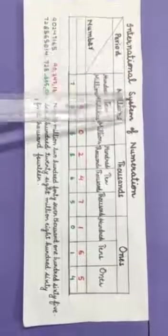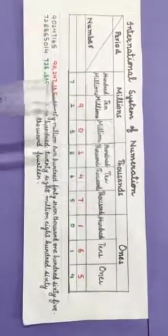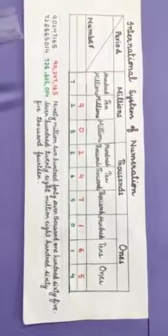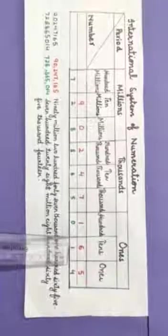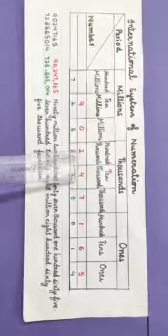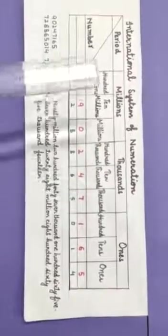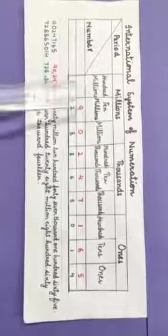Now, moving further, we will discuss the International System of Numeration. In the International System, the first 3 digits from the right form the ones period, the next 3 digits form the thousands period, and the next 3 digits form the millions period.